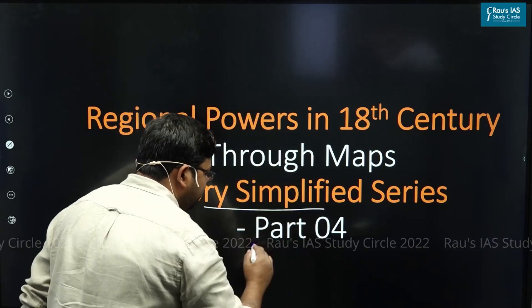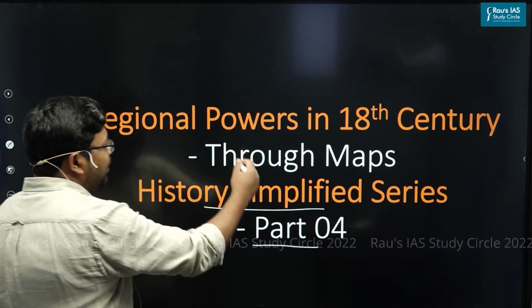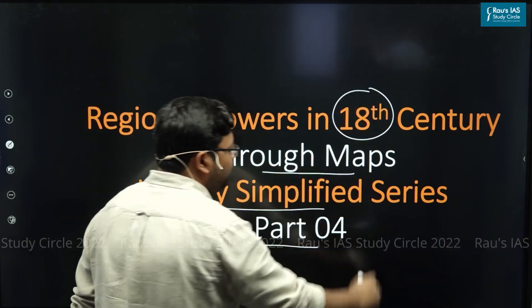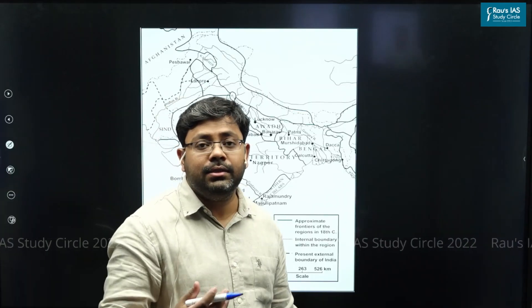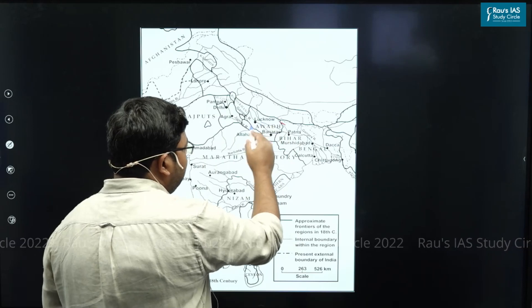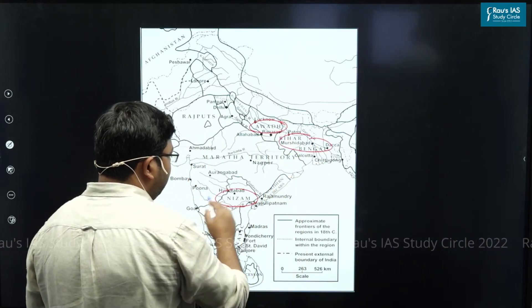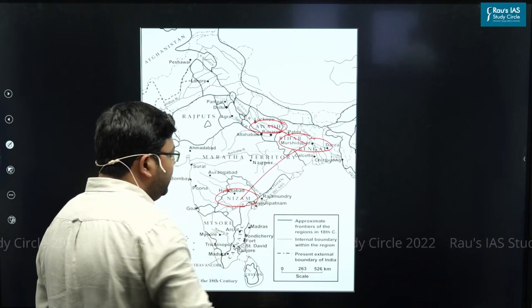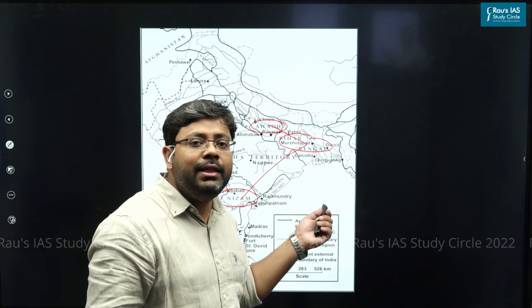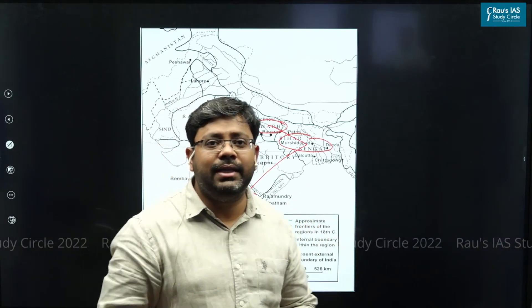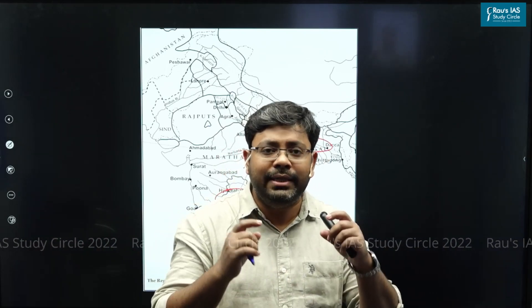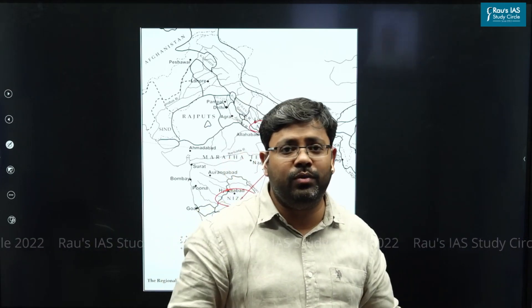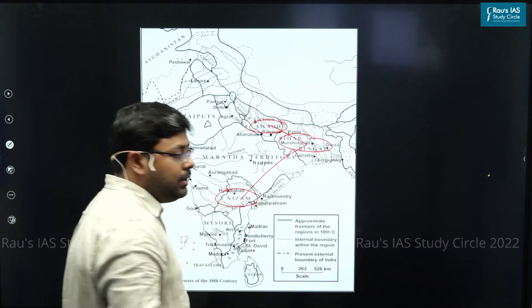Hello, and in this fourth session of the History Simplified series, we are going to discuss regional powers in India in the 18th century through maps. To start with, let's discuss Bengal, Awadh, and Hyderabad. These three powers were called successor states because they were all established by Mughal officers themselves, and all three kingdoms copied the same economic and administrative structure followed by the Mughals.